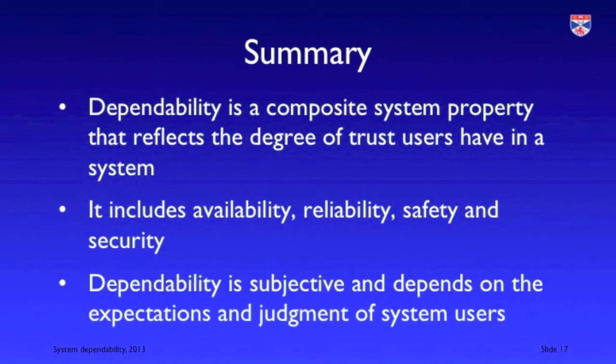In summary, dependability is a composite property that reflects the degree of trust that users have in a system. They may consider the system to be dependable or undependable. The elements of dependability are four other properties: availability, reliability, safety, and security. And dependability is subjective — it depends on the expectations of the observer of the system behaviour, so that different observers will have different views on whether or not a system is dependable.